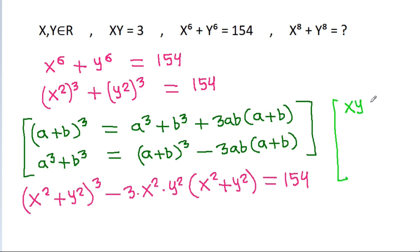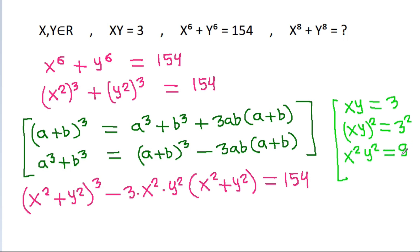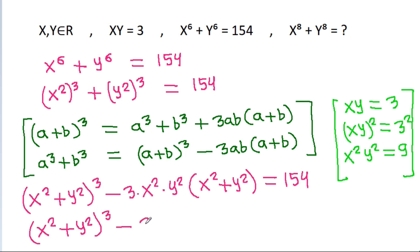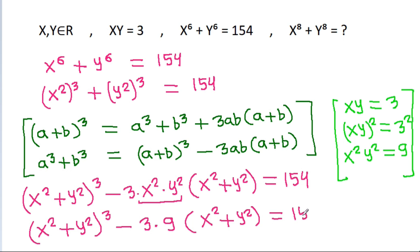Since xy equals 3, we have x squared y squared equal to 9. So this becomes x square plus y square cubed minus 3 times 9 times x square plus y square, and that is equal to 154.